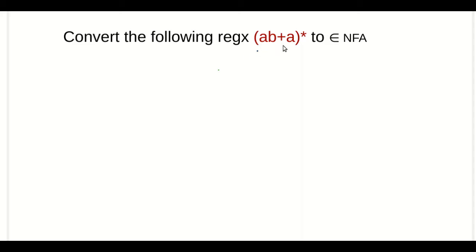Convert the following regular expression — aB union a, whole star — to an epsilon-NFA. What we will do is construct an epsilon-NFA for a concatenated B, then modify it to accept a concatenated B union a, then modify that epsilon-NFA to accept the given regular expression. So first let us consider the epsilon-NFA for a concatenated B.